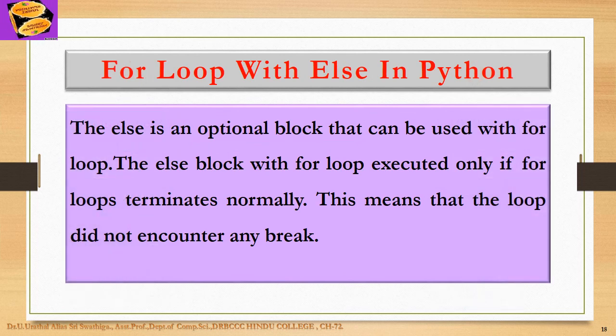For loop with else in Python: the else is an optional block that can be used with for loop. The else block with for loop is executed only if the loop terminates normally. This means that the loop did not encounter any break.